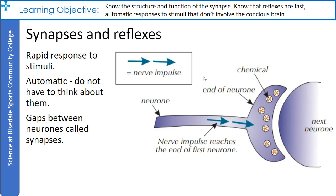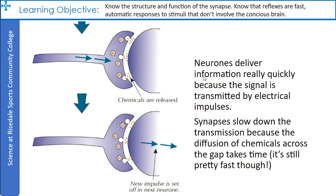Reflexes are rapid responses to a stimulus that happen without you having to think about them — they're automatic. The neurons involved in reflexes aren't all joined together though; they have gaps between them called synapses. The connection between two neurons is called a synapse, and the nerve signal is transferred by chemicals which diffuse across the gap. These chemicals then set off a new electrical signal in the next neuron. Synapses slow down the transmission of a nervous impulse because the diffusion of chemicals across the gap takes time — still pretty fast though.